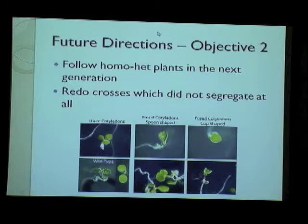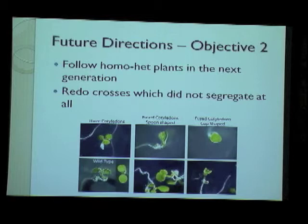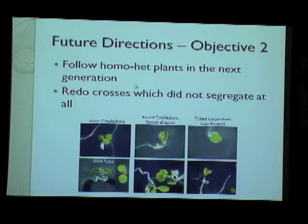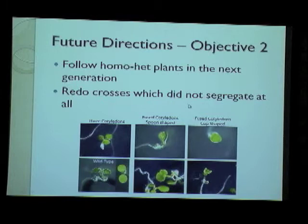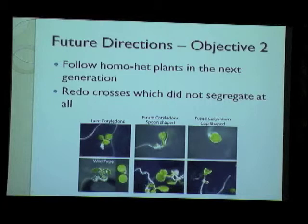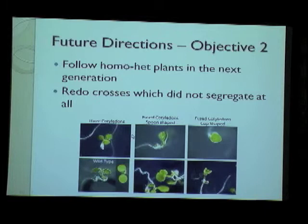The future direction for this objective is to follow the plants that are homozygous at one locus and heterozygous at the other, since they will segregate to give 50% double homozygous mutants. Crosses that gave only wild-type bands at one locus need to be remade. Recently in our lab, one cross that had a homo-het plant did segregate in the next generation as expected, and we observed very interesting phenotypes: fused cotyledons that had not separated after emerging from the seedling, showing either a spoon-like or cup-like shape. In one particular plant from the same cross, we also noticed three cotyledons, which we will go ahead and characterize.